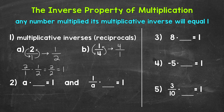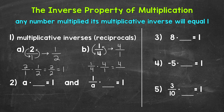Now let's multiply to show that this will equal 1. So 1 fourth times 4, keeping 4 in fractional form so we can multiply straight across. Numerators: 1 times 4 equals 4. Denominators: 4 times 1 equals 4. So we get 4 over 4, which equals 1. The multiplicative inverse or reciprocal of 1 fourth is 4.